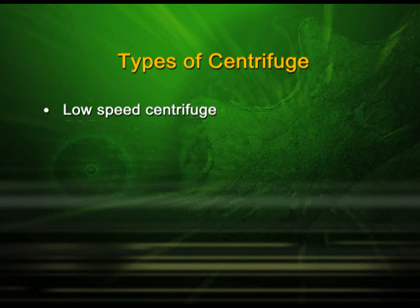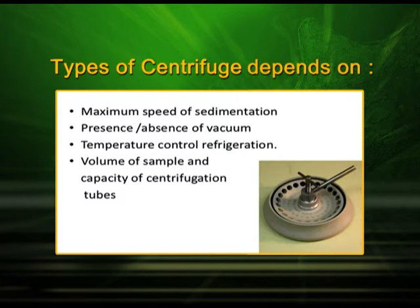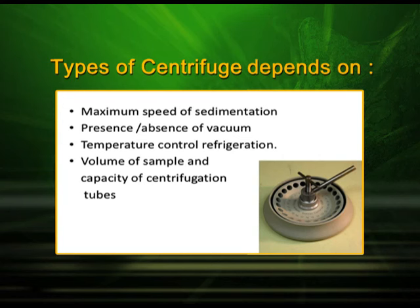We have four types of centrifuge: low speed centrifuge, micro centrifuge, high speed centrifuge, and ultra centrifuge. The type of centrifuge depends on the maximum speed of sedimentation — revolutions per minute — as well as the presence or absence of vacuum, temperature control, and the volume of the sample and capacity of centrifugation tubes.